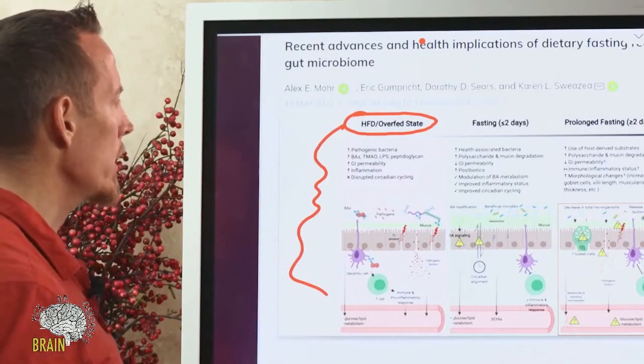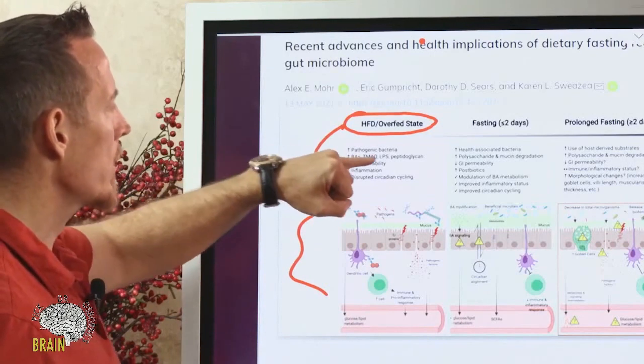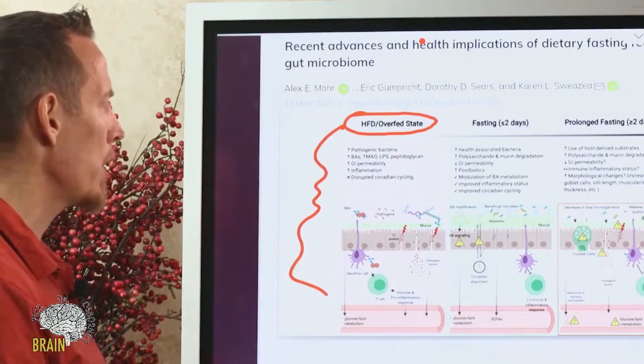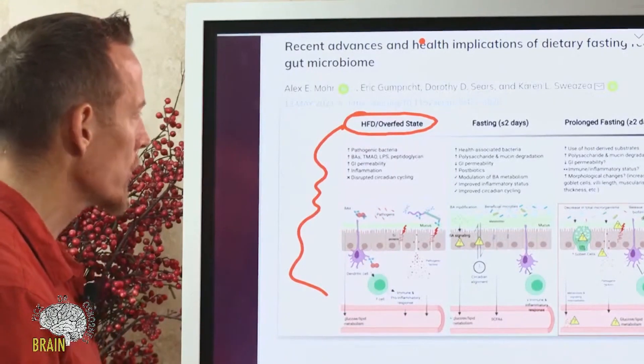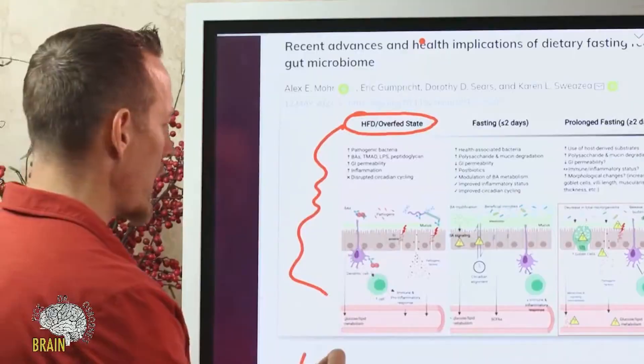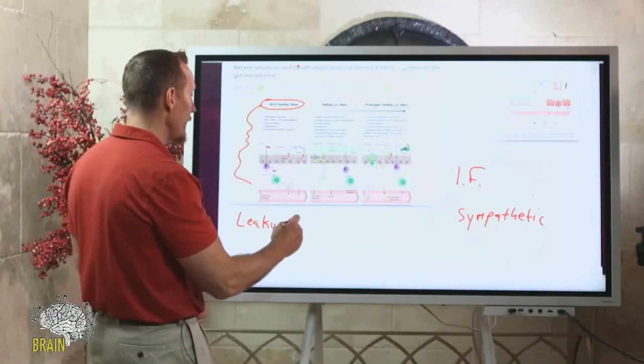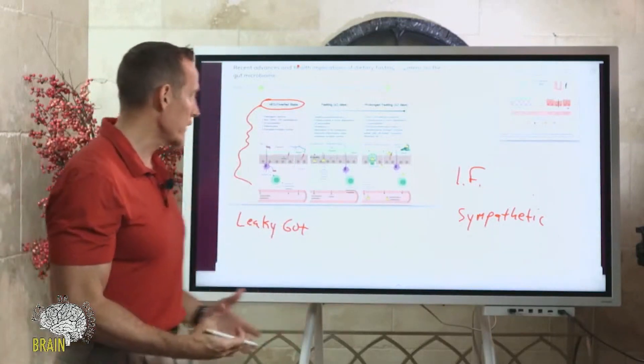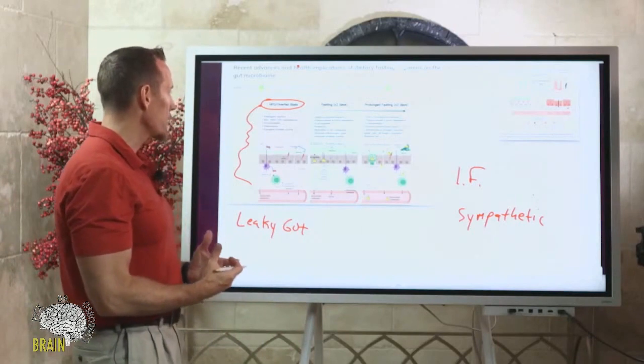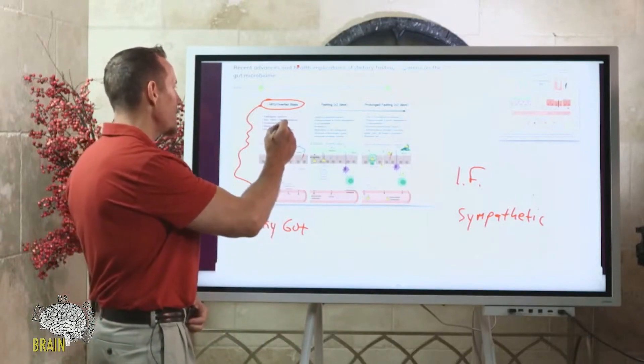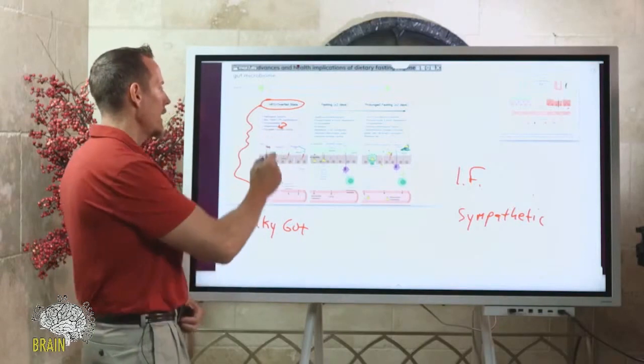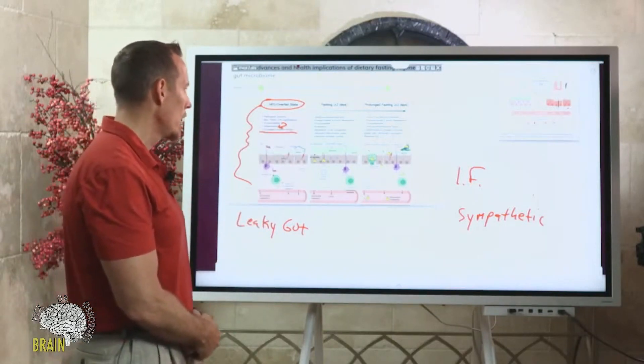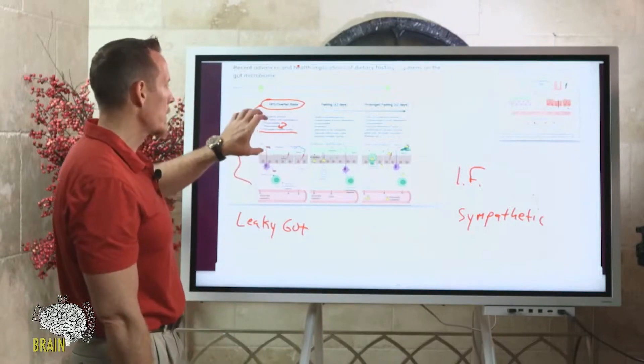By doing so, it increases a lot of their toxins. These things here are BAS, TMAO, LPS, and peptidoglycans—all different types of byproducts of increasing bad bacteria, which leads to GI permeability, aka leaky gut. We know that overeating leads to leaky gut. It doesn't matter what you eat; the act of overeating increases permeability to a certain degree, and that permeability feeds back and creates an inflammatory cascade. That inflammation can then disrupt your sleep.